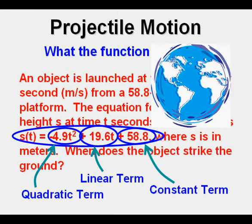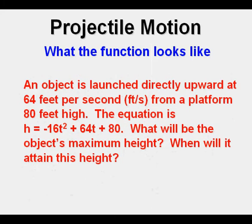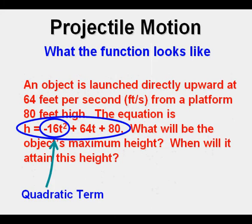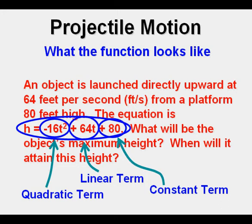Here's another problem. This one is in feet and the quadratic term is negative 16 t squared because it's in feet not meters. The linear term is 64 t, which means 64 feet per second. Then our constant term is 80 feet, launched from a height of 80 feet.